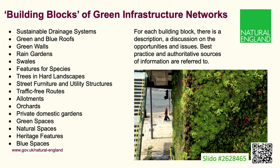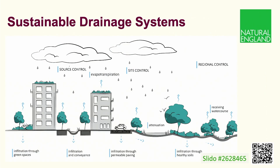One of the chapters looks at what we're calling the building blocks of green infrastructure networks — from sustainable drainage, green roofs, green walls and trees through to hard landscapes, allotments, orchards and parks, natural spaces, heritage features and blue spaces. We look at each of those building blocks in turn, examining the issues and opportunities. For example, on sustainable drainage systems, we're very pleased that DEFRA have announced they will be looking to implement Schedule 3 of the Flood and Water Management Act, so this really will be something all of us will be thinking about in the future.